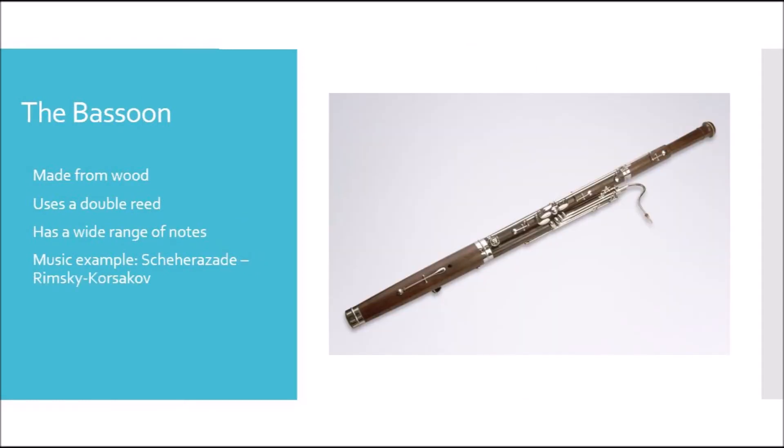The final woodwind instrument that we will be talking about today is the bassoon. Like the oboe, the bassoon is made from wood and uses a double reed, which gives it its unique sound. The bassoon has a wide range of notes, though it's used for its lower range in bands and orchestras, and uses the upper range more for solo repertoire.